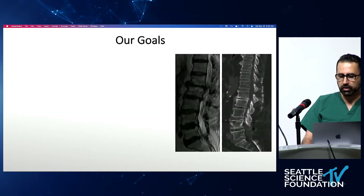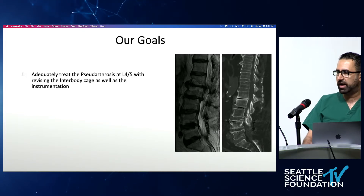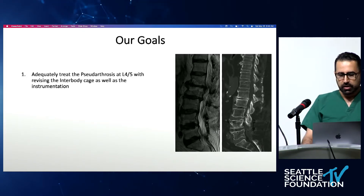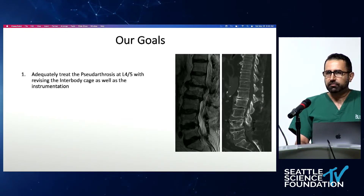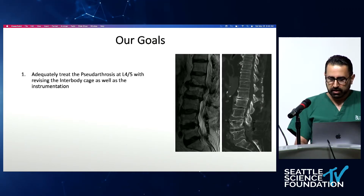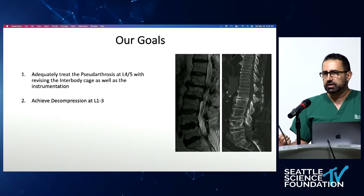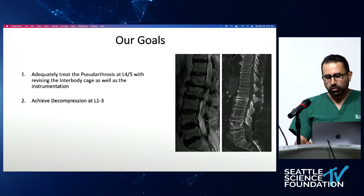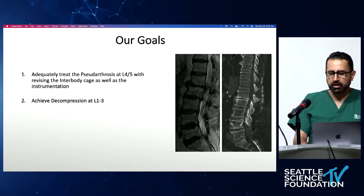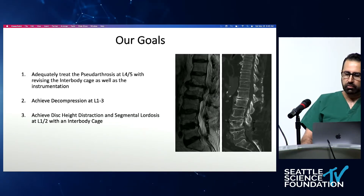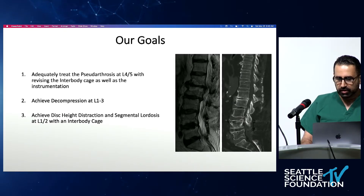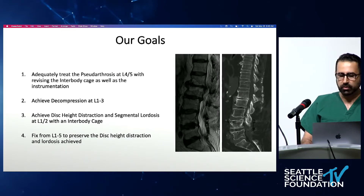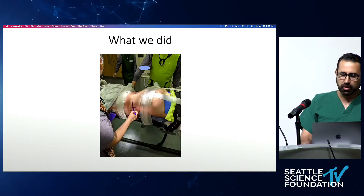I always tell my residents: be clear about your goals, then craft a surgical strategy around them. The goals here were to adequately treat the pseudoarthrosis at L4-5 — meaning revising the interbody cage and instrumentation — to achieve decompression between L1 and L3 to relieve neurogenic claudication, to achieve adequate disc distraction and segmental lordosis across L1-2 where we can see the disc vacuum phenomenon, and then to preserve those gains with fixation.